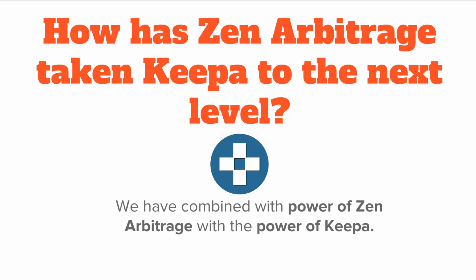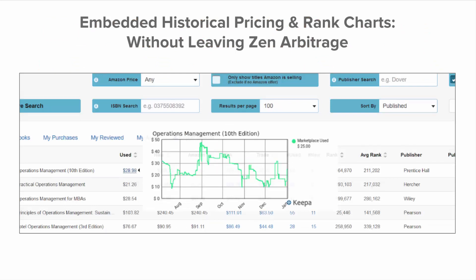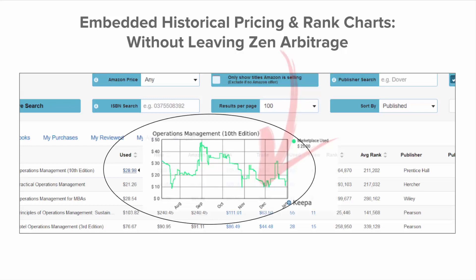We have combined the power of Zen Arbitrage with the power of KIPA to basically form one super tool. And as of the time I'm recording, this is the new feature we just debuted. What we've done is taken KIPA and essentially embedded the charts directly inside Zen Arbitrage. Every other tool in the universe forces you to click outside of their tool to get access to this data, which adds another layer of complexity and is honestly very cumbersome. So we've hyper-streamlined the process. Now you simply hover over any figure — whether it's a price figure or a sales rank figure — and this chart pops up showing the historical pricing and sales rank data you need to make an intelligent purchasing decision.